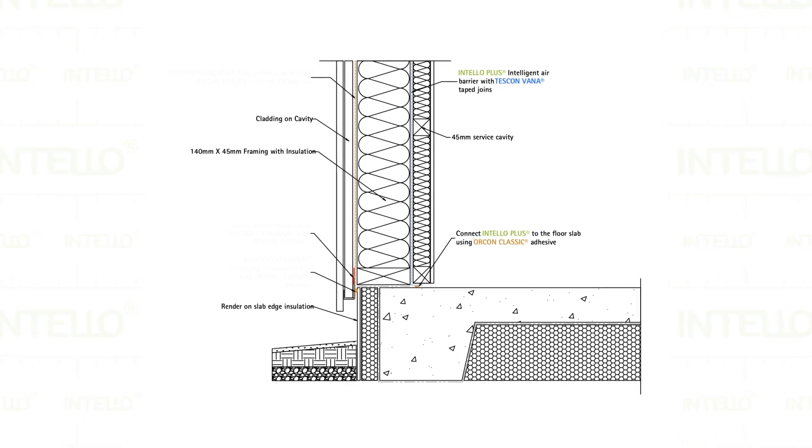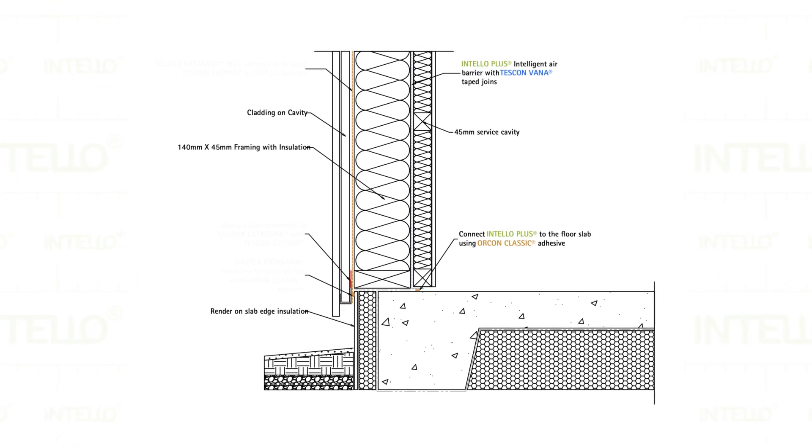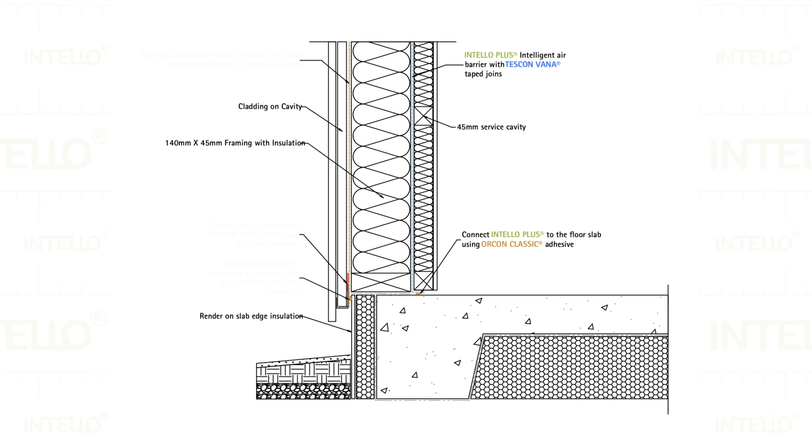It's standard practice to install a 45mm service cavity on the inside of the air tightness layer. This reduces the thermal bridging of the insulation and allows the addition of a further insulation layer on the inside of the air tightness layer. It creates a dedicated space for electrical and plumbing services to be installed without impeding the main insulation layer. It also allows for pictures to be fixed to the internal linings of the building without affecting the air tightness layer.